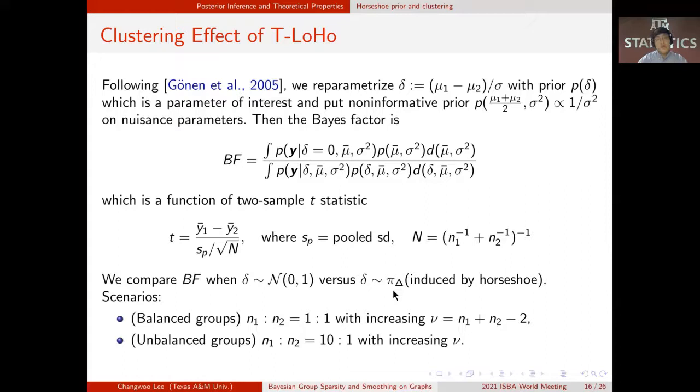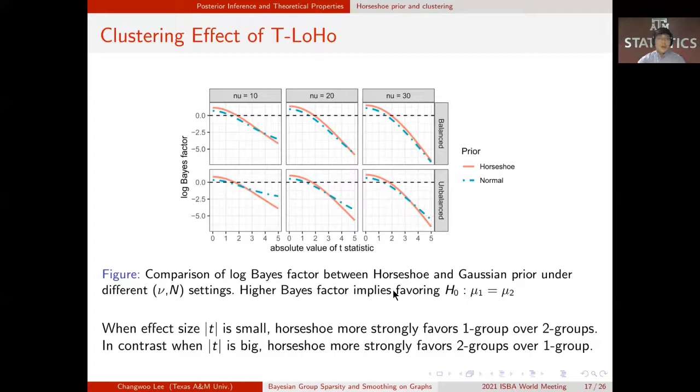We consider balanced group scenarios and unbalanced group scenarios with increasing degrees of freedom. The comparison of Bayes factor reveals how low rank horseshoe prior differs from the usual normal prior in terms of clustering.